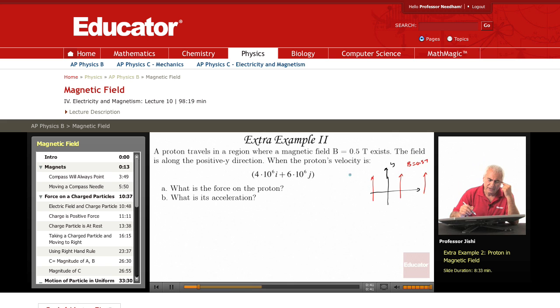When the proton velocity is 4 times 10 to the 6, and this is meters per second here. When this is the proton's velocity plus 6 times 10 to the 6, now I is this I hat that we talked about, and J is J hat.